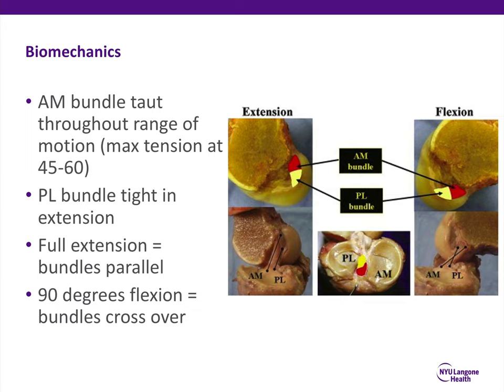In terms of the biomechanics of the anterior cruciate ligament, there's an anteromedial and a posterolateral bundle. The anteromedial bundle is relatively taut throughout range of motion; however, the posterolateral bundle is certainly tighter in extension. In full extension, the two bundles of the ACL are actually in parallel. If you see the picture on the bottom left, the posterolateral and the anteromedial bundles are perfectly parallel. However, when the knee bends to about 90 degrees of flexion, the bundles cross over and you can see this X-type configuration.